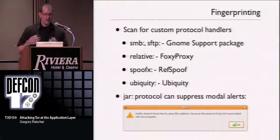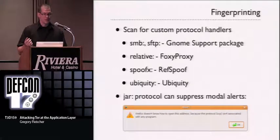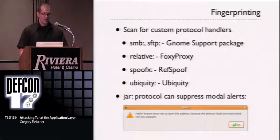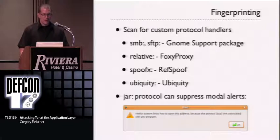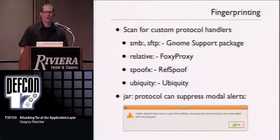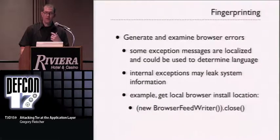We can also scan for custom protocol handlers. SMB and SFTP are installed by the GNOME support package; there's a relative file protocol handler installed by FoxyProxy, and so on. Normally these generate annoying browser pop-ups, but by wrapping requests in a specific JAR protocol, we can actually suppress those — so this can be done completely silently.